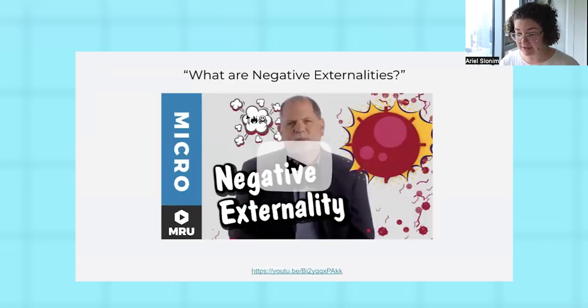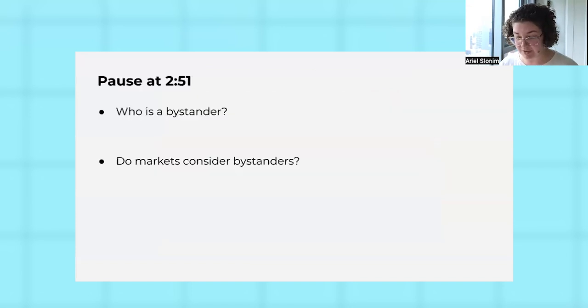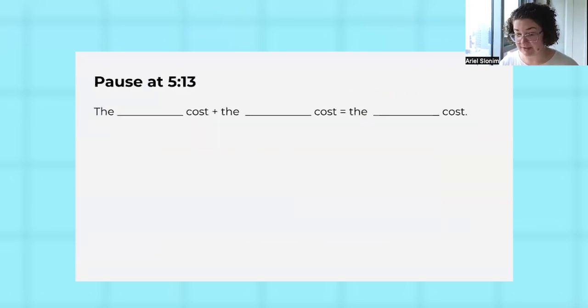Then we have a great new video on what are negative externalities. Our example uses antibiotic resistance as the negative externality, that cost on bystanders of resistance to antibiotics. For all of our videos, we have questions where you can pause at the given time and you can say, are we understanding the key information? Who is a bystander? Are markets considering those bystanders? They're not. What's going to be our calculation to get the social cost curve? We want private plus the external cost to get to that social cost curve.